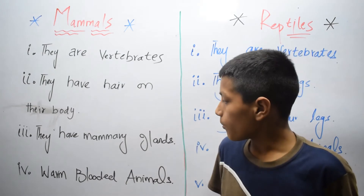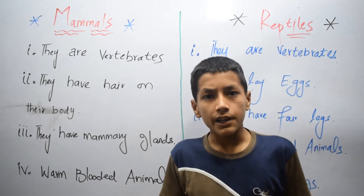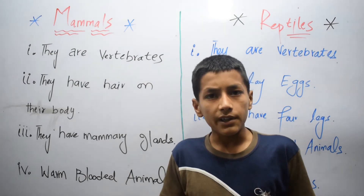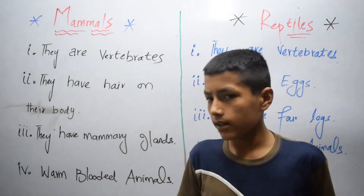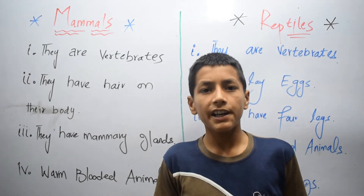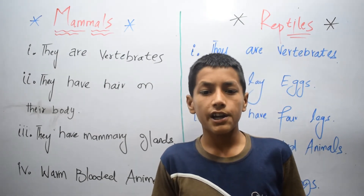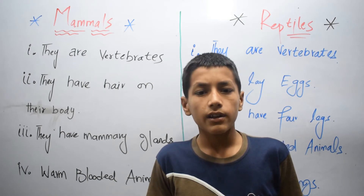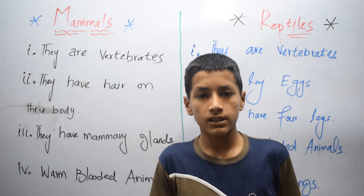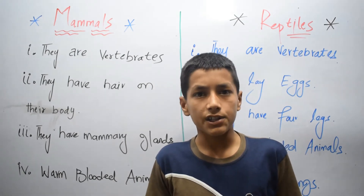They have mammary glands. Mammary glands mean they give milk to the young babies. Mammals are warm-blooded animals. Warm-blooded animals mean that they cannot change their internal temperature according to the outer temperature, and keep their internal temperature constant.